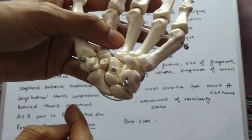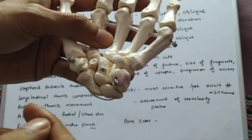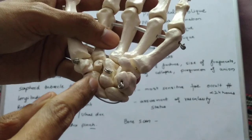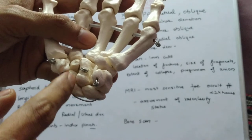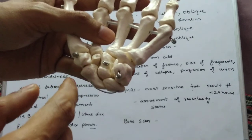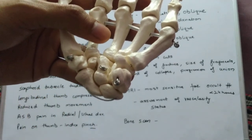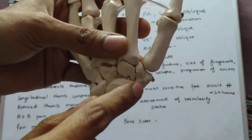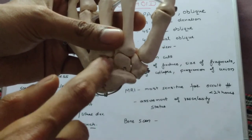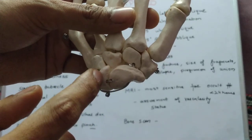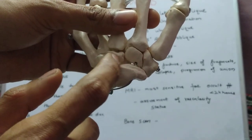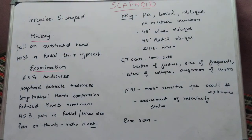It is important to know why the scaphoid goes into non-union and avascular necrosis: about 80 percent of the scaphoid bone is covered by articular cartilage, leaving no scope for periosteal healing, making non-union and avascular necrosis very common. Over the dorsal radial aspect, we have the dorsal branch, plus all ligamentous attachments — including the scapholunate, scaphocarpal, and intercarpal ligaments — all attached over this dorsal radial aspect.